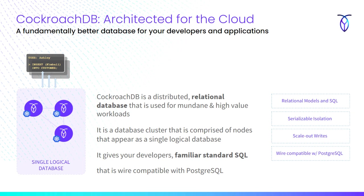CockroachDB guarantees transactions, is inherently resilient and scalable. It's wire-compatible with Postgres, so it's familiar, and it's fully elastic — truly a distributed system written with the same principles as modern distributed systems. Let me move on to the next slide.